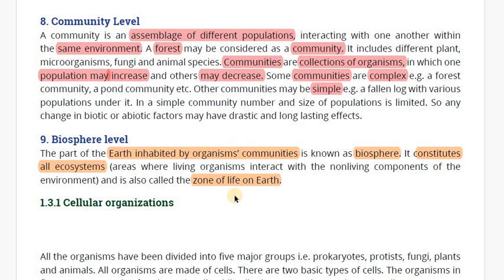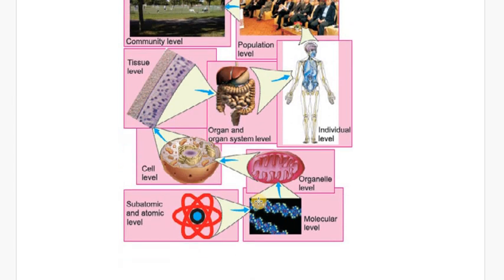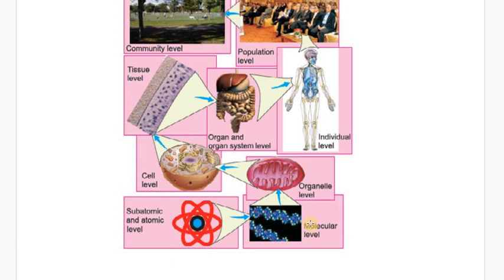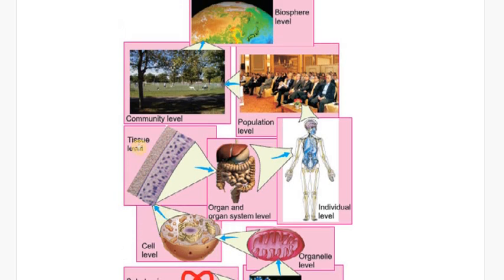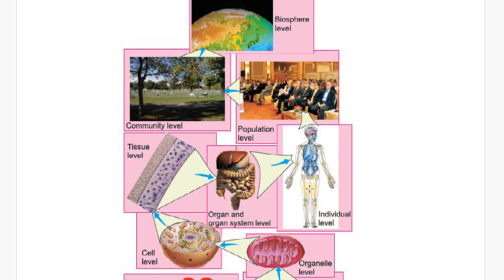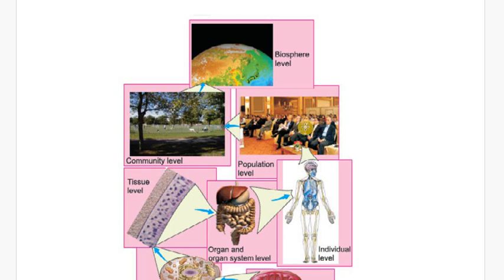Now let's look at the diagram. We start from the bottom with the molecular level, then the organelle level, then the cell level, then tissue level, then organ level, and organ system level. When we combine individuals we create the population level. Different populations living in one place form communities, and many communities living together create the biosphere level. This completes all our levels of organization.